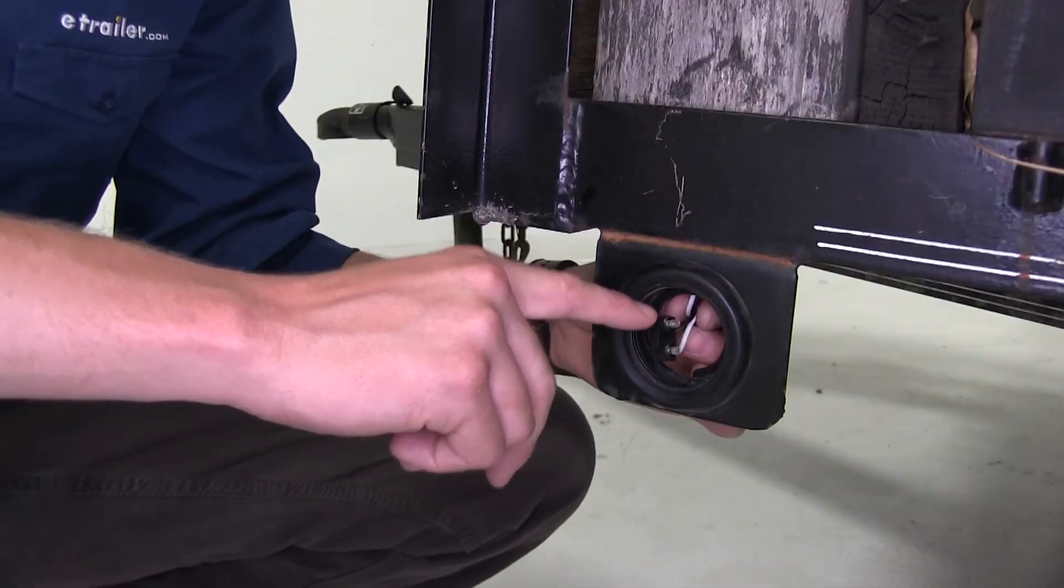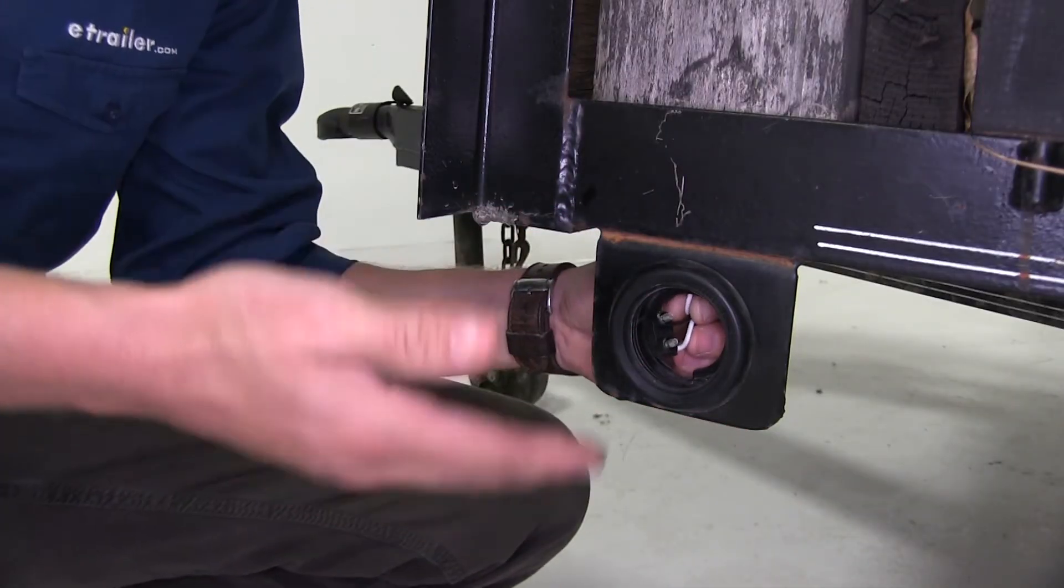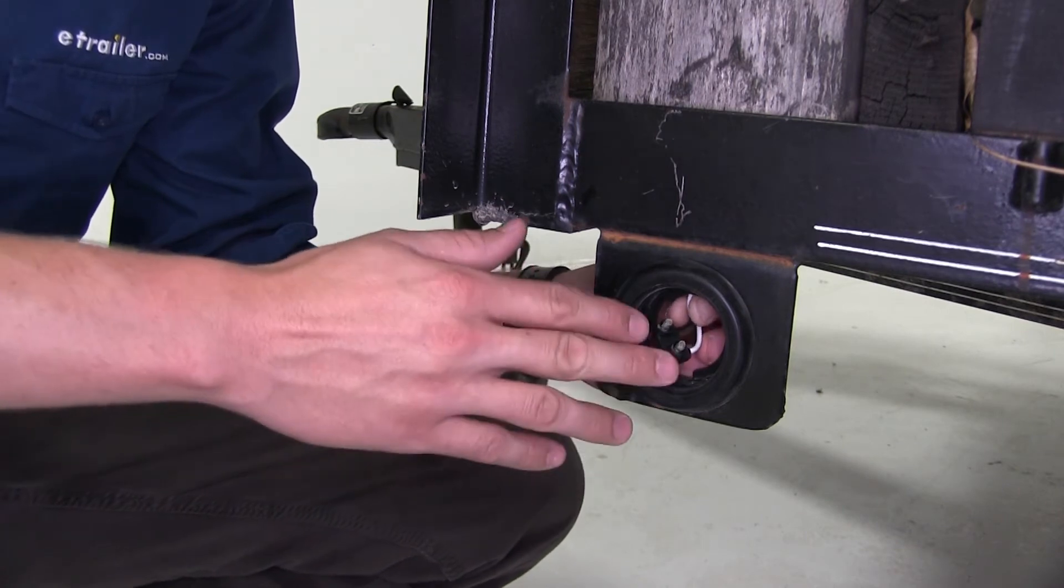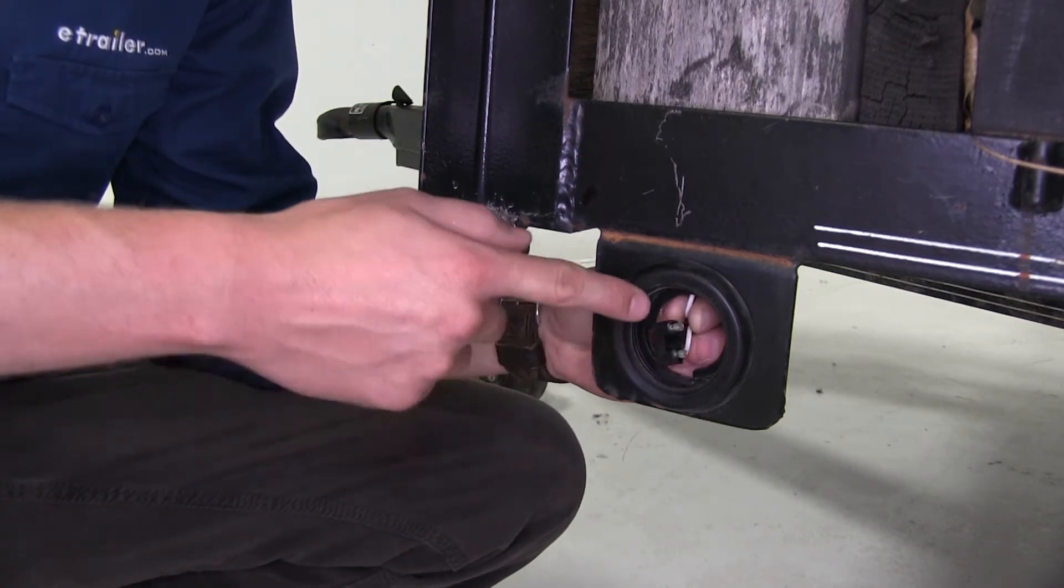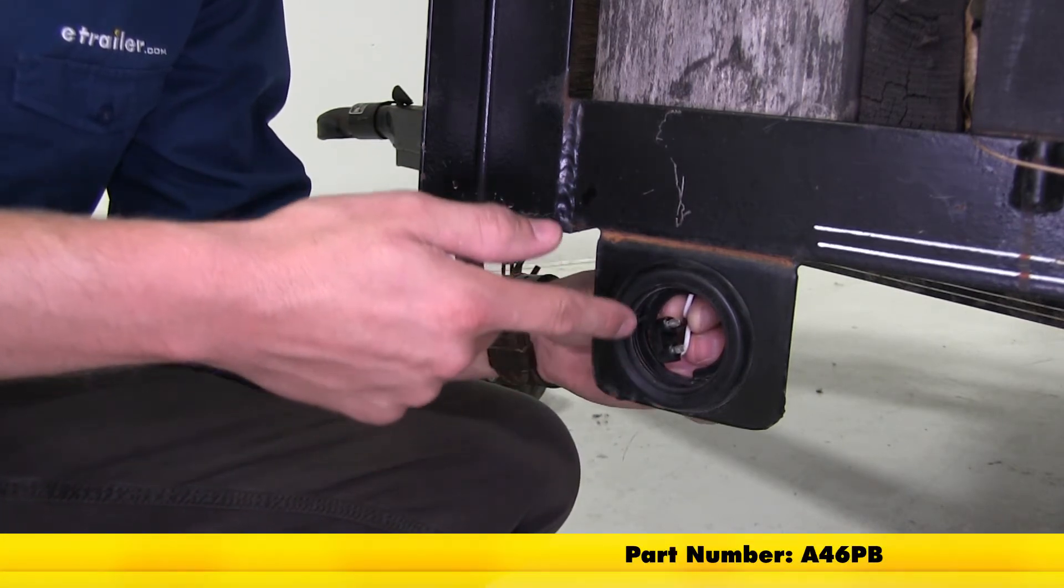Now our trailer here is using a two-wire pigtail, which means it's going to work out great for our new Optronics light. If you don't have one, you could pick up one with part number A4-6PB.